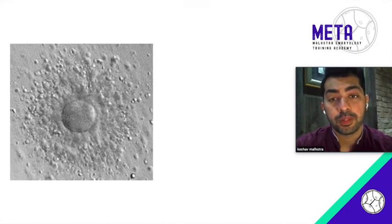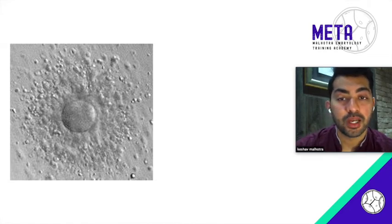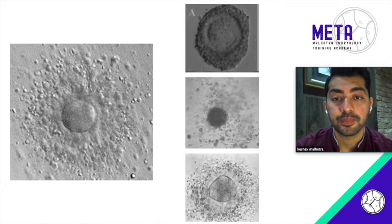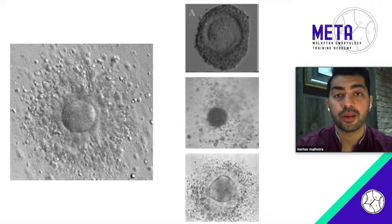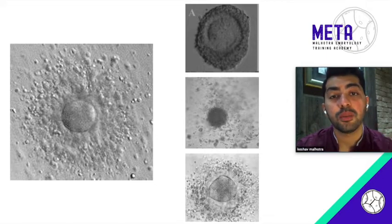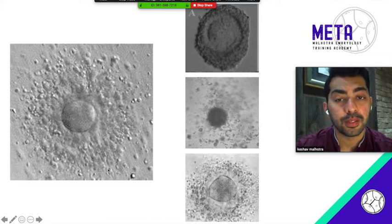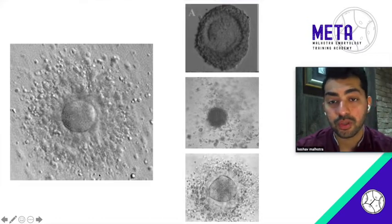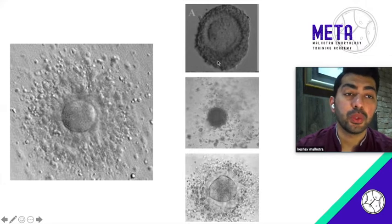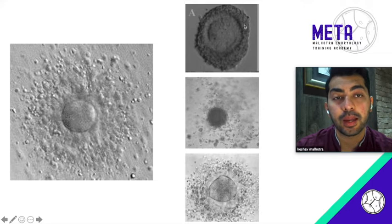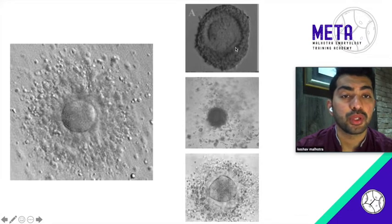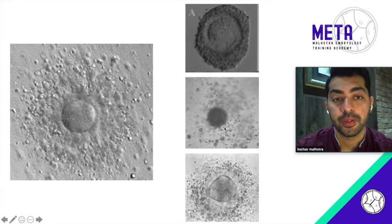This grading process starts right from the cumulus-oocyte complex (COC) itself. A normal COC has the oocyte surrounded by a layer of corona cells with a sunburst appearance of the cumulus complex cells. An immature COC looks like one where the cumulus and the corona are tightly compact or tightly adhered to each other — such an egg will most likely yield an immature egg.